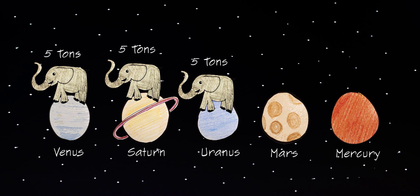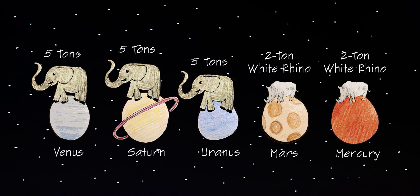On Mars and Mercury, the elephant's weight would drop to be just as heavy as a 2-ton white rhino. Again, the same weight on very different planets.